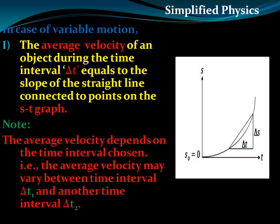The average velocity depends on the time interval we choose between the two points. For time interval delta t1 we will have a different average velocity compared to delta t2.